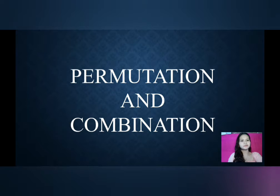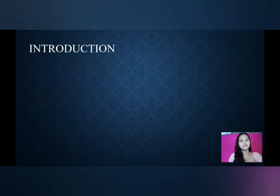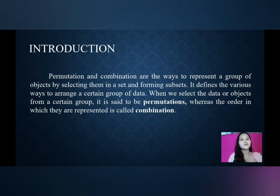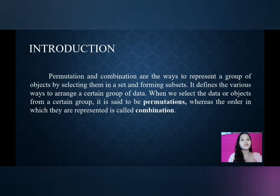Permutation and Combination — Introduction. Permutation and combination are the ways to represent a group of objects by selecting them in a set and forming subsets. It defines the various ways to arrange a certain group of data. When we select the data or objects from a certain group, it is said to be permutations, whereas the order in which they are represented is called combination.